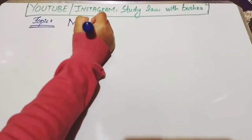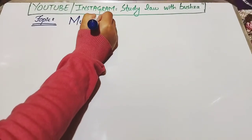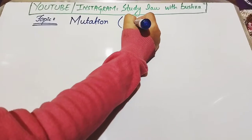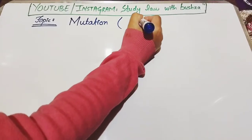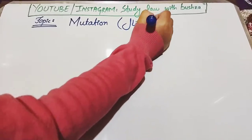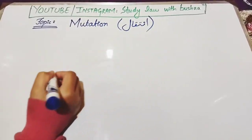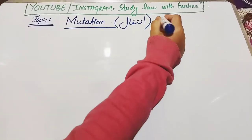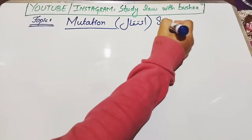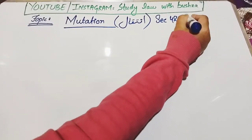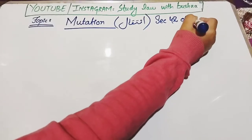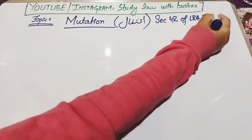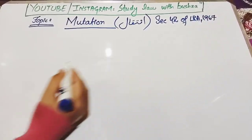Assalamu alaikum viewers and welcome to my channel Study Law with Bushra. In today's video we are going to discuss the topic of Land Revenue Act which is mutation. Mutation ko Urdu mein kehte hain intikal. Mutation is explained under section 42 of West Pakistan Land Revenue Act 1967.